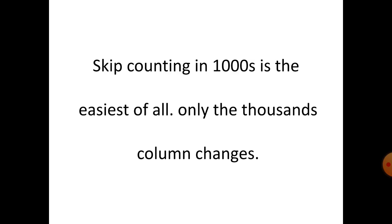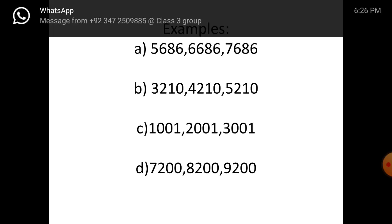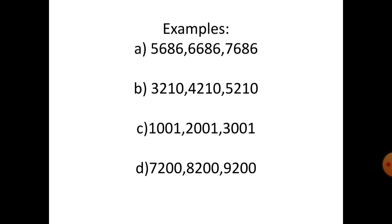Skip counting in thousands is the easiest of all — only the thousands column changes. Example A: five thousand six hundred and eighty-six, six thousand six hundred and eighty-six, seven thousand six hundred and eighty-six.